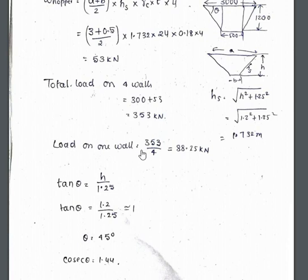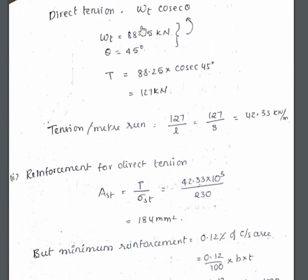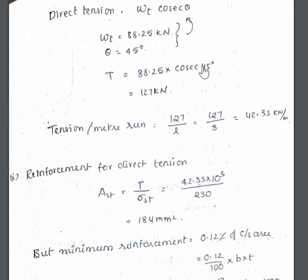We have to check the weight on each wall. The load on each wall is 353 divided by 4, which equals 88.25 kilonewtons. Since we assumed theta as 45 degrees, there is no problem and we can continue with that.